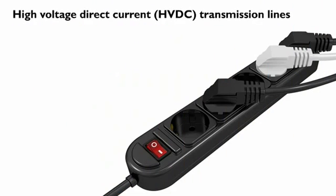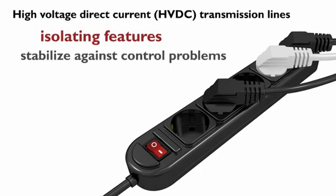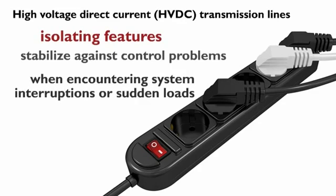High voltage direct current, HVDC transmission lines, are increasingly important where isolating features are required to stabilize against control problems. These features will be necessary in large power distribution networks, where system interruptions or sudden loads in one area of the grid can cause synchronization problems in the rest of the power system.